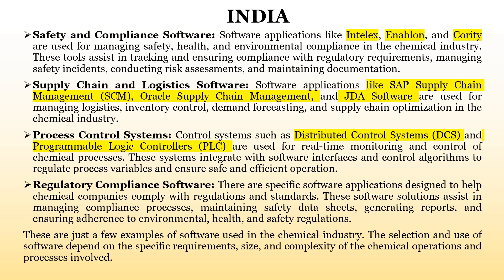The seventh one is process control systems, actually employed in the industry itself. There are two major types: distributed control systems (DCS) and programmable logic controllers (PLCs). These help us to understand and improve process variables through an interface to ensure safe and efficient operations.